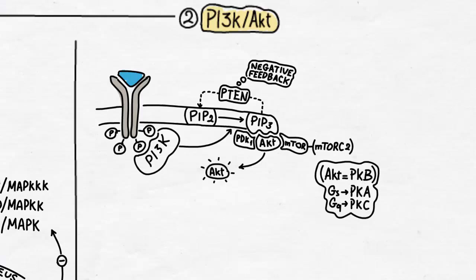This reminds us of protein kinase A mentioned in the GS signaling and protein kinase C mentioned in the GQ signaling. The AKT waits for binding of two other proteins to get activated. These proteins are PDK1 or PI dependent kinase 1 and mTORC2, which stands for mammalian target of rapamycin complex.